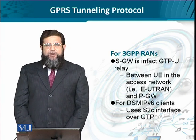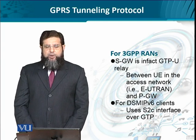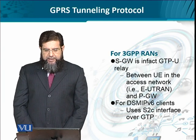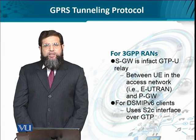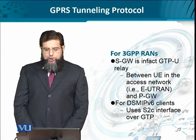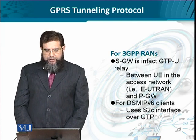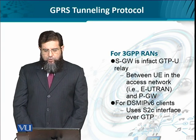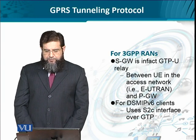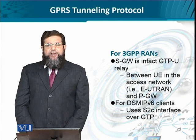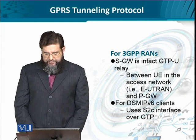For 3GPP radio access networks including UTRAN and GRAN for GPRS, the serving gateway actually acts more like a relay agent on behalf of the user equipment towards the packet gateway. For the dual stack Mobile IP version 6 scenario, the interface S2C is used over GTP.